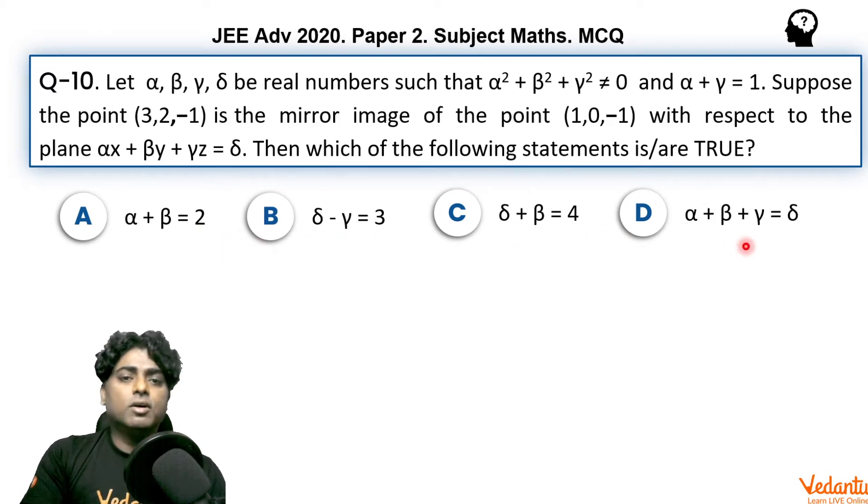The question came in the category multi-correct, so one or more options can be true. Obviously the options are given in terms of α, β, γ, and δ.